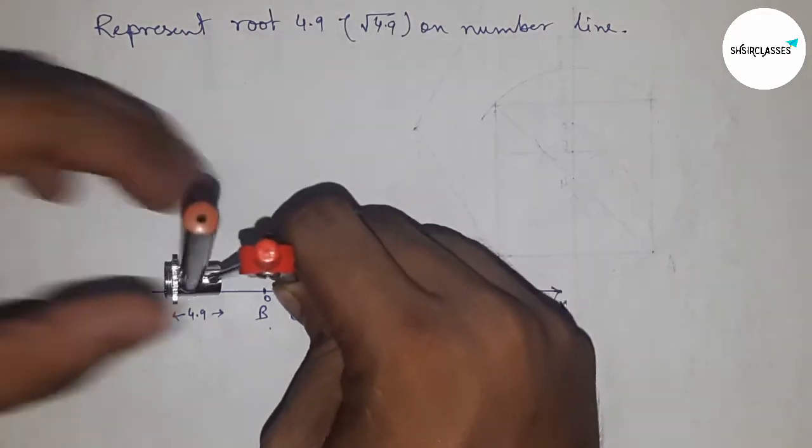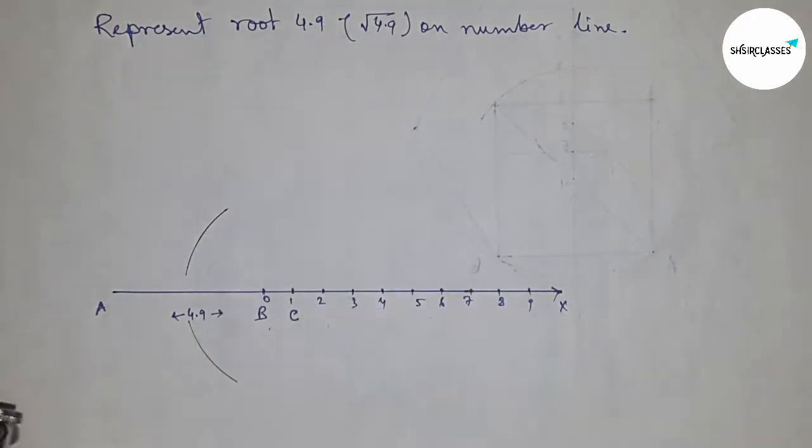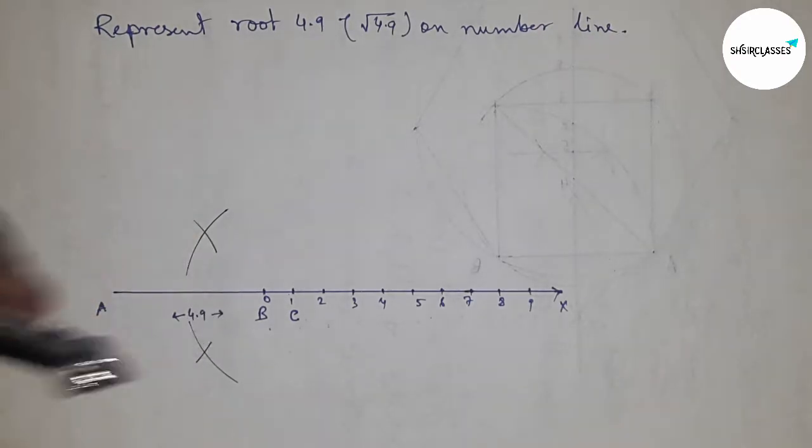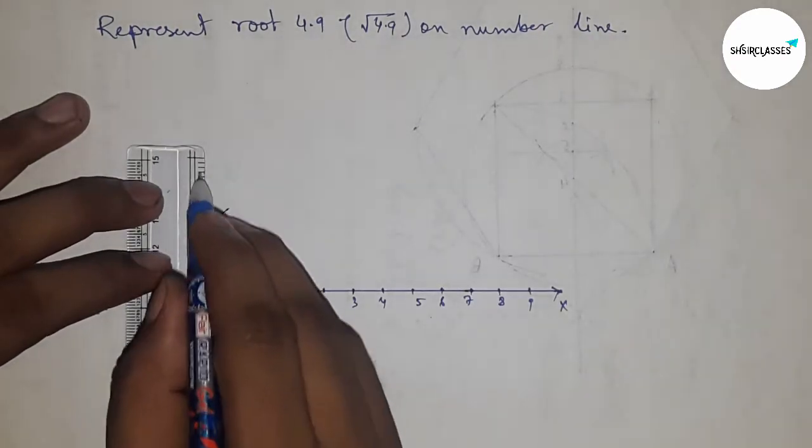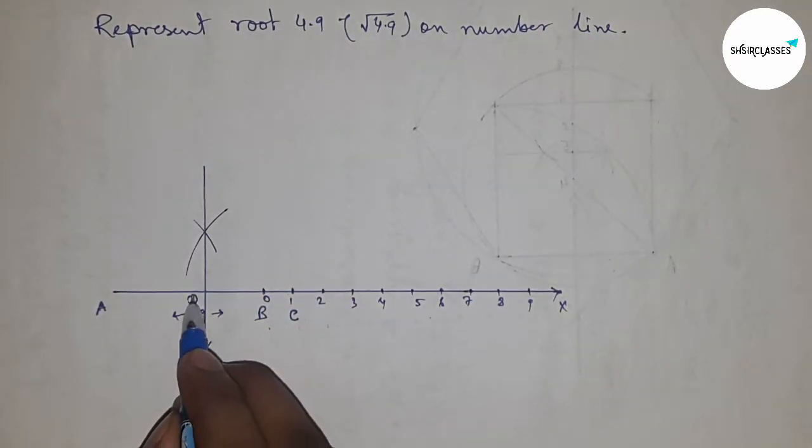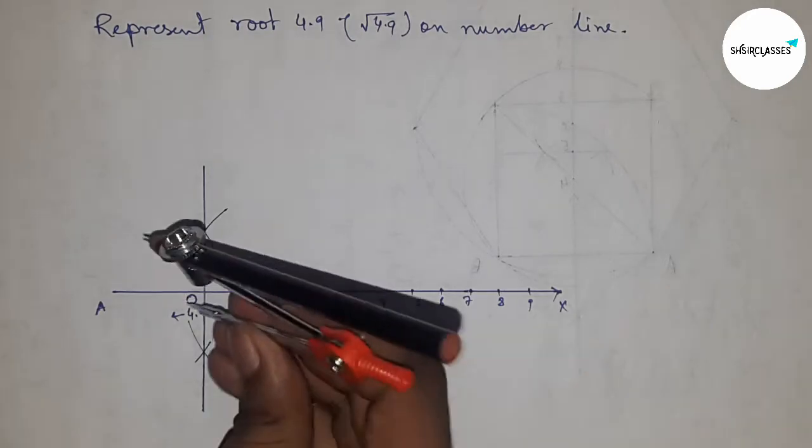Now we have to bisect the line AC. So taking greater than half of AC and drawing an arc with the same length, putting the compass here and cutting the arc. Next, joining this which bisects at point O.